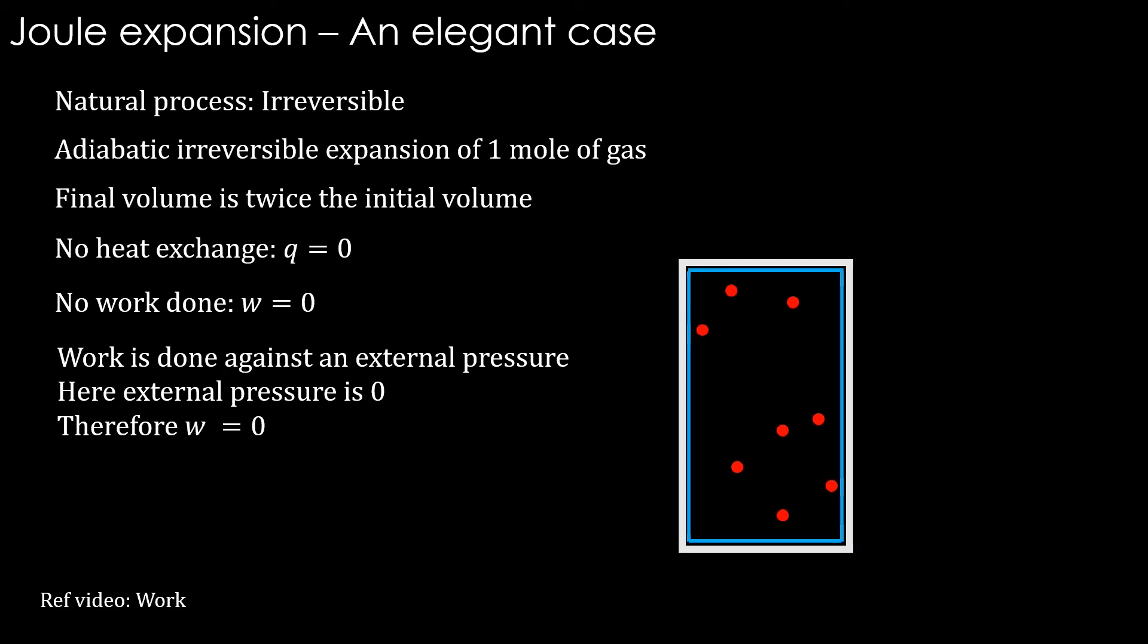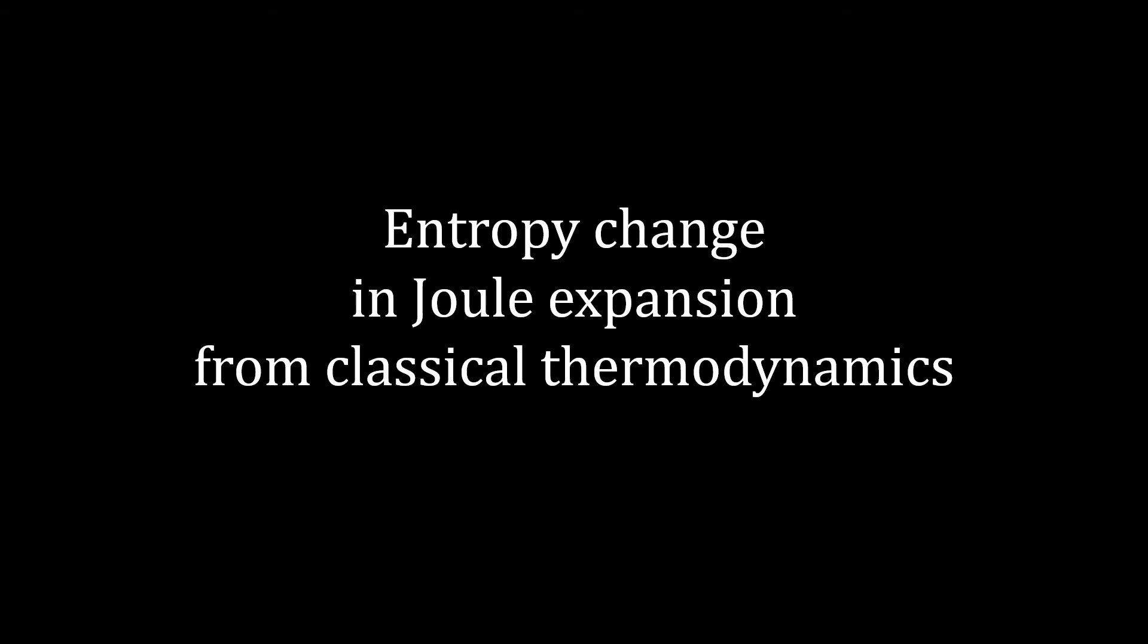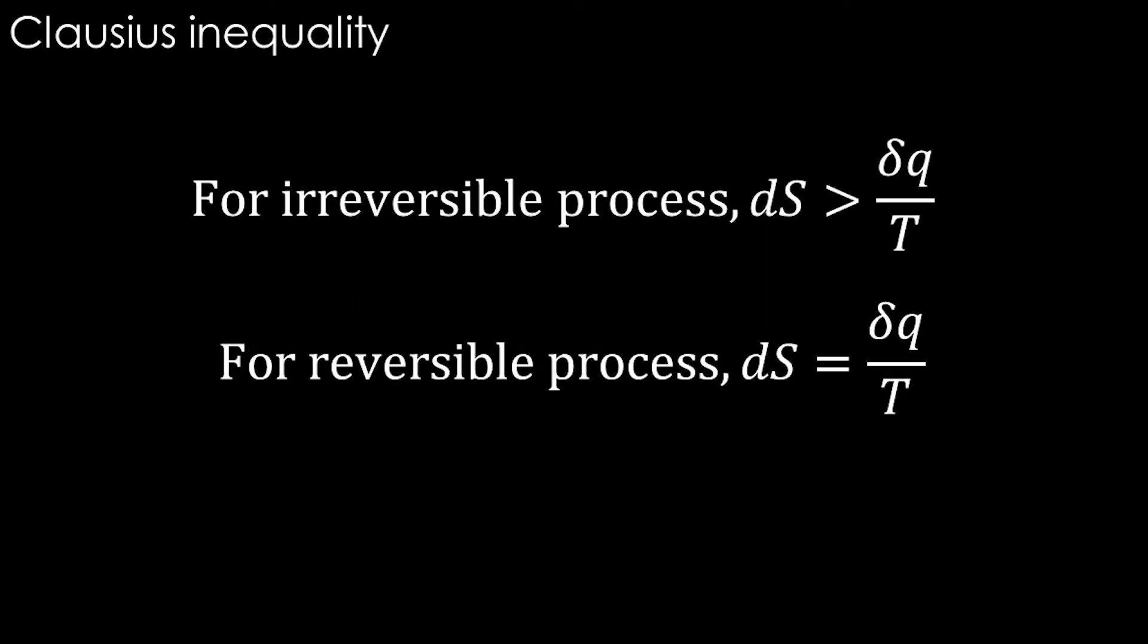Since q and w are zero, there is no change in internal energy or temperature. Now we will see how to calculate the entropy change for this process. Since q is zero, can we simply say that q divided by T is zero and entropy change is zero? We can't because this is not a reversible process. Only in the reversible process can we say that it is equal to q divided by T. Therefore, we need to figure out a way to calculate the entropy change.